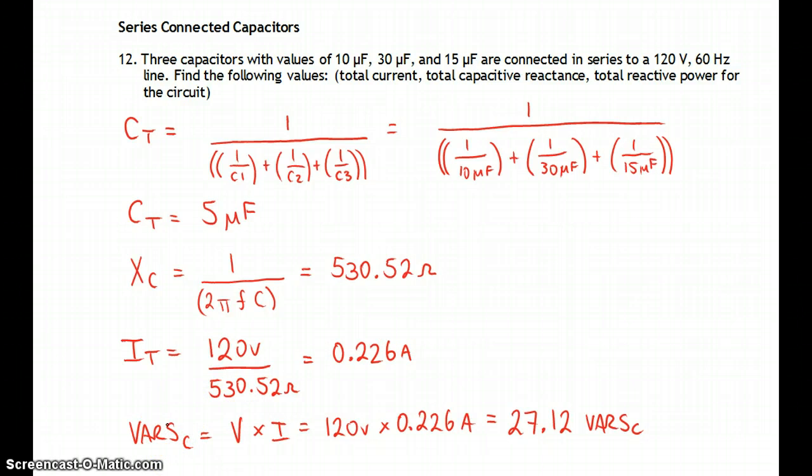And if we're looking for the VARs, that's just power. You know, just a different form of power. It's potential energy held in the capacitor. Voltage times current, 120 times 0.226 amps gives us 27.12 VARs C.